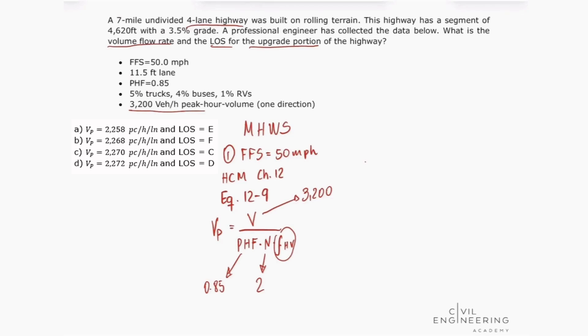But our highway capacity manual gives us equation 12-10, that says that our adjustment factor for heavy vehicles is equal to 1 divided by 1 plus our P sub T, which is our proportion of SUTs and TTs, times our E sub T, which is our passenger car equivalent of one heavy vehicle, minus 1.